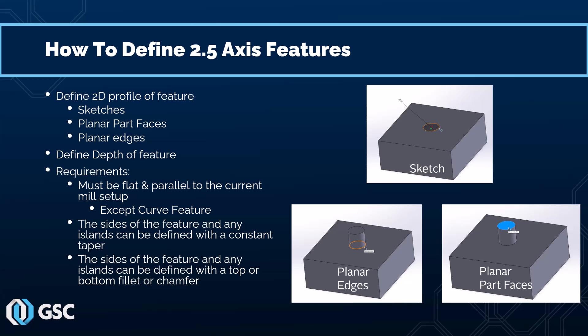Once you select a 2D profile, you can go ahead and define the depth — how much the feature is going to be extruded. A requirement for this to be considered a 2.5-axis feature is that the top and bottom of the feature must be flat and parallel to the current mill setup. The only exception is the curve feature. These features can have tapers as long as the taper is constant all around, and they can also have top and bottom fillets or chamfers.